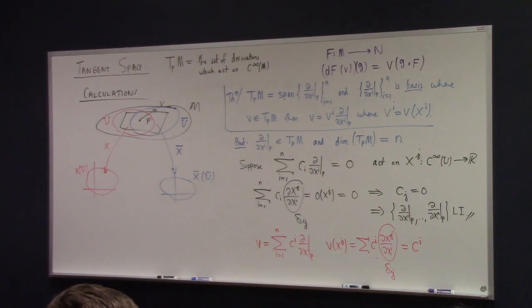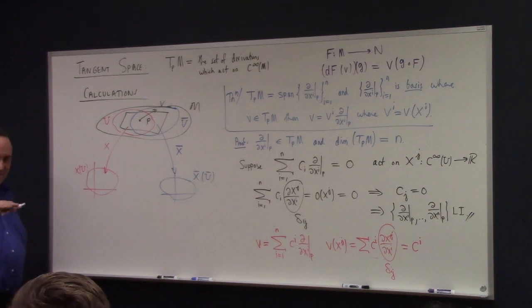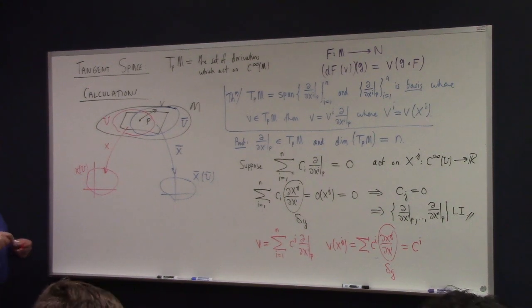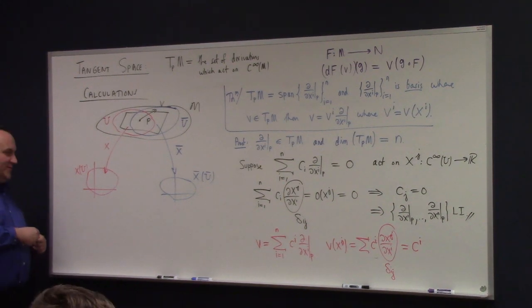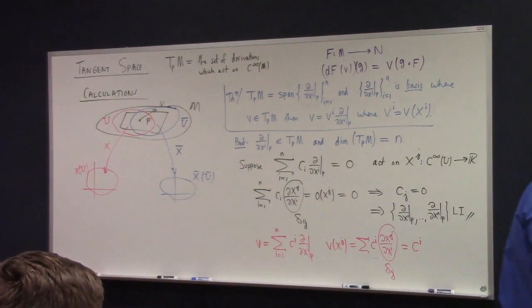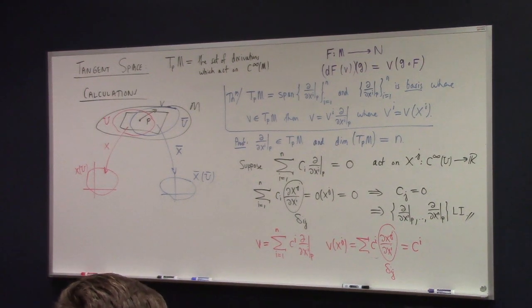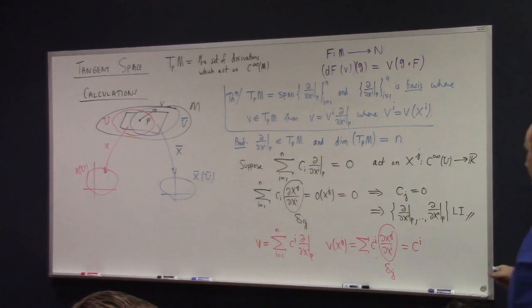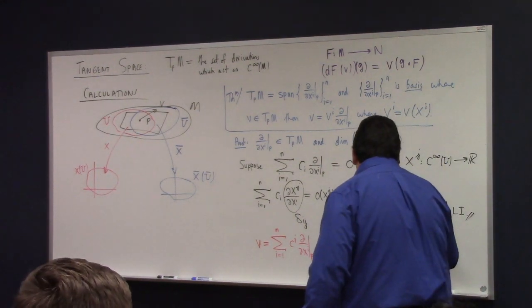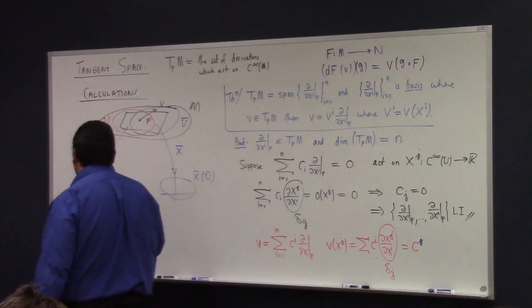Are you guys with me? That definitely is a c^j. J is fixed but arbitrary; i is an index of summation there. The j survives, the i does not.